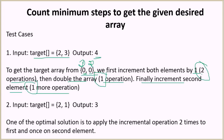Note that you could have reached the desired array in five operations by incrementing the first element twice and the second element three times, but we have to return the minimum possible number of operations, which is 4.